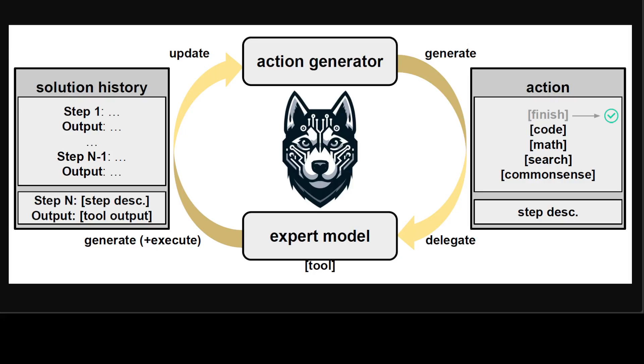Husky iterates between two stages as you can see on your screen. First, generating the next action to take towards solving a given task, and secondly executing the action using expert models and updating the current solution state.